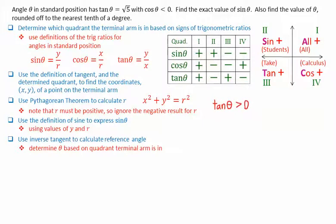First of all, tan theta is greater than 0, and cosine of theta is less than 0. This corresponds to an angle in quadrant 3.